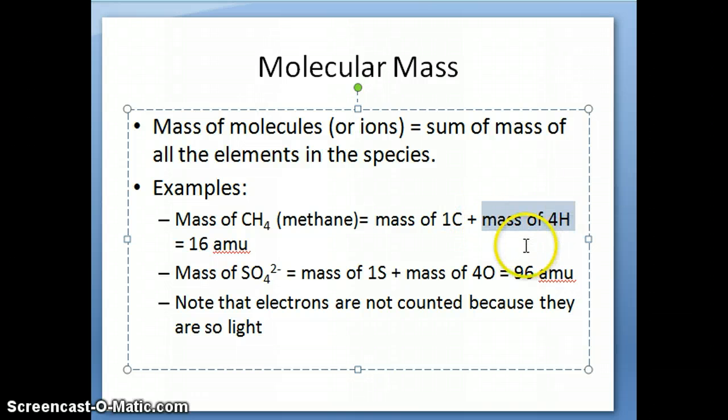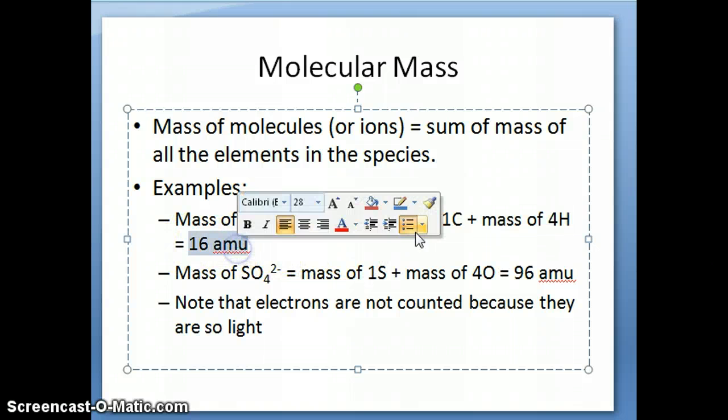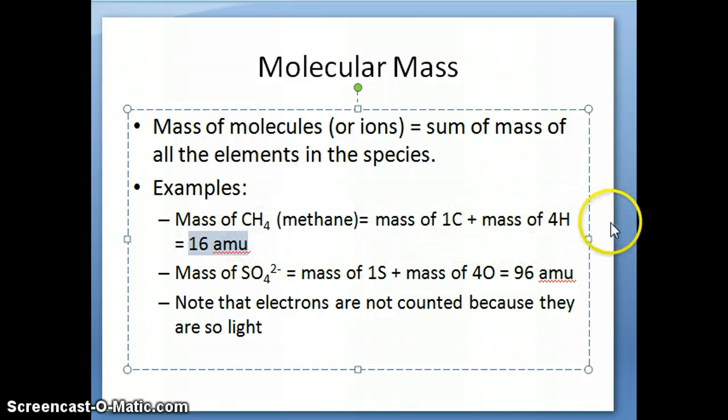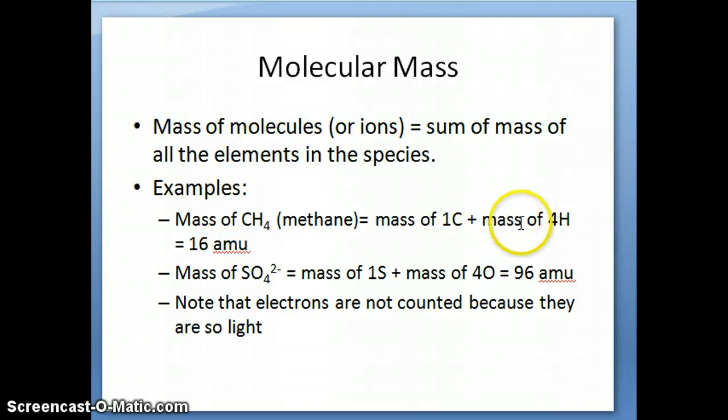In the mass of the hydrogen atom, each one of them is 1 amu. So when you add the 12 plus the 4 times 1, what you get is 16 amu. So this type of calculation would be something you'll do quite often to determine the mass of molecules.